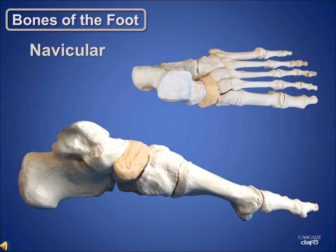Just distal of the talus, on the medial side, is the navicular. This is sometimes referred to as the scaphoid bone. Here at Cascade, we use the term navicular.